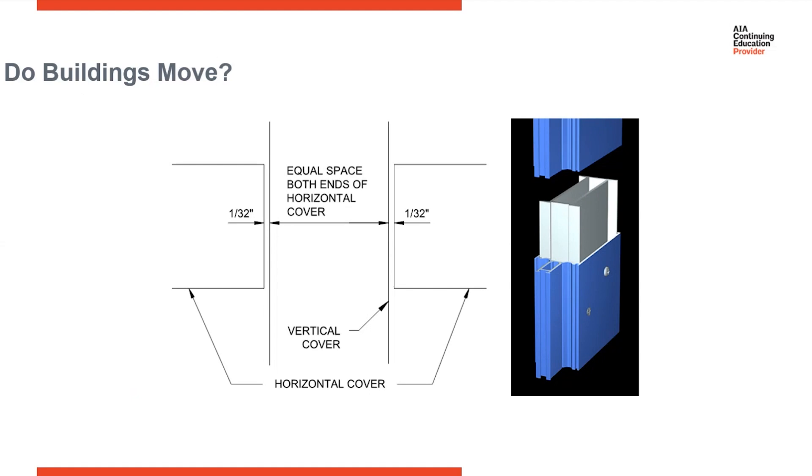Curtain wall systems are designed to handle this daily movement. On the right, you can see horizontal and vertical covers. These covers are cut short to allow for thermal expansion. You'll notice there's a 1-32nd inch gap between the horizontal covers and the vertical covers. As the covers heat up due to the sun, the steel will slightly grow, but this gap will ensure that the horizontal covers do not end up touching the vertical covers.